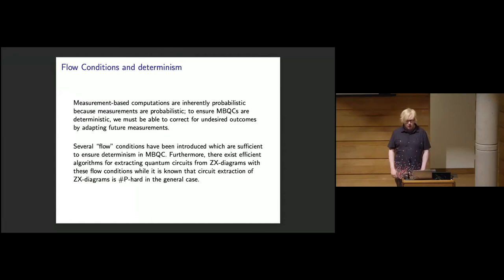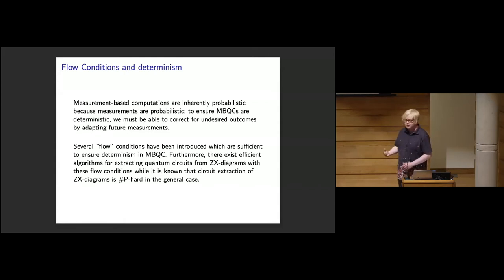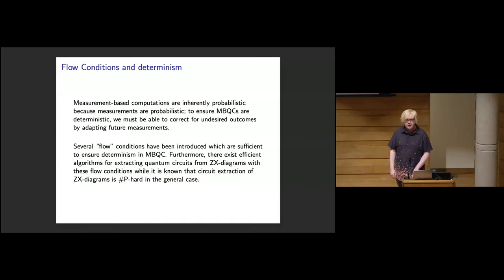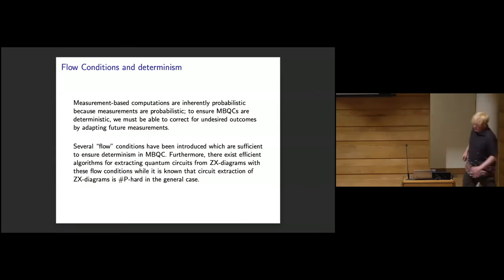Measurement-based quantum computations are inherently probabilistic: every measurement can give either the desired or undesired outcome, and we need to correct for undesired outcomes on future measurements. Several flow conditions have been introduced to deal with this — they give a recipe for how to do all these corrections. These flow conditions are sufficient, and sometimes necessary, for determinism in MBQC, and all of them have efficient circuit extraction algorithms.